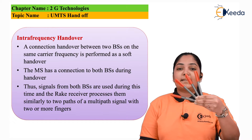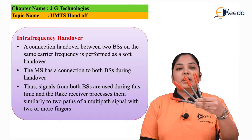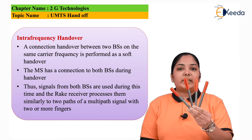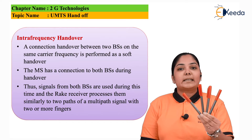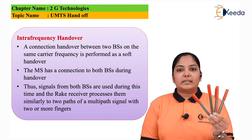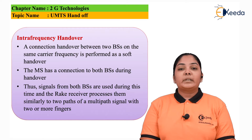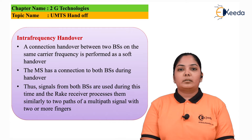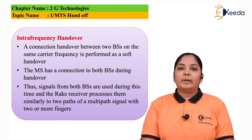The rake receiver looks like an instrument similar to a garden rake used to remove stones. In this rake receiver, we can see there are multiple fingers on which the signal is incoming, and then the receiver processes the signal for further information. The rake receiver is similar to a garden rake, which has multiple fingers or comb-like structure. Here we consider a receiver which has two different fingers on which the received signal comes from both base stations, and then it gets processed in the mobile station.